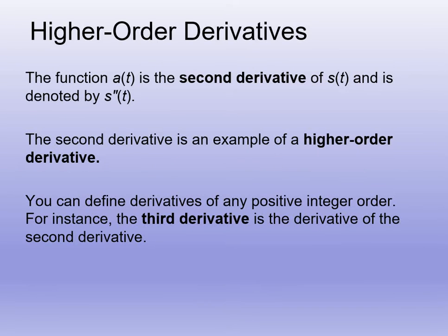Just so we know, the second derivative is usually we call that a of t, and it is always s double prime of t as well, it means the same thing. Just like the first derivative is v of t or s prime of t, meaning the same thing.